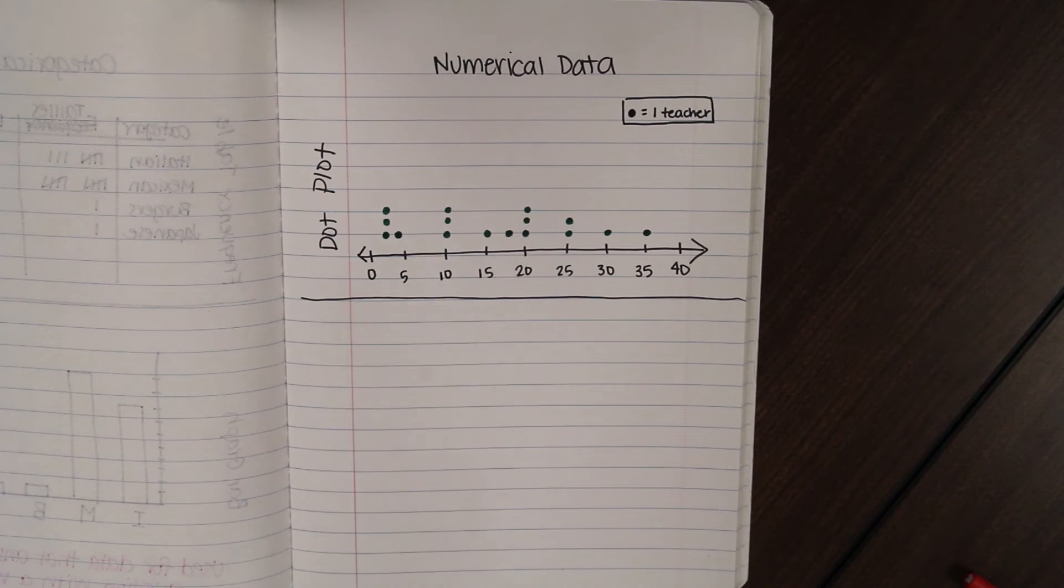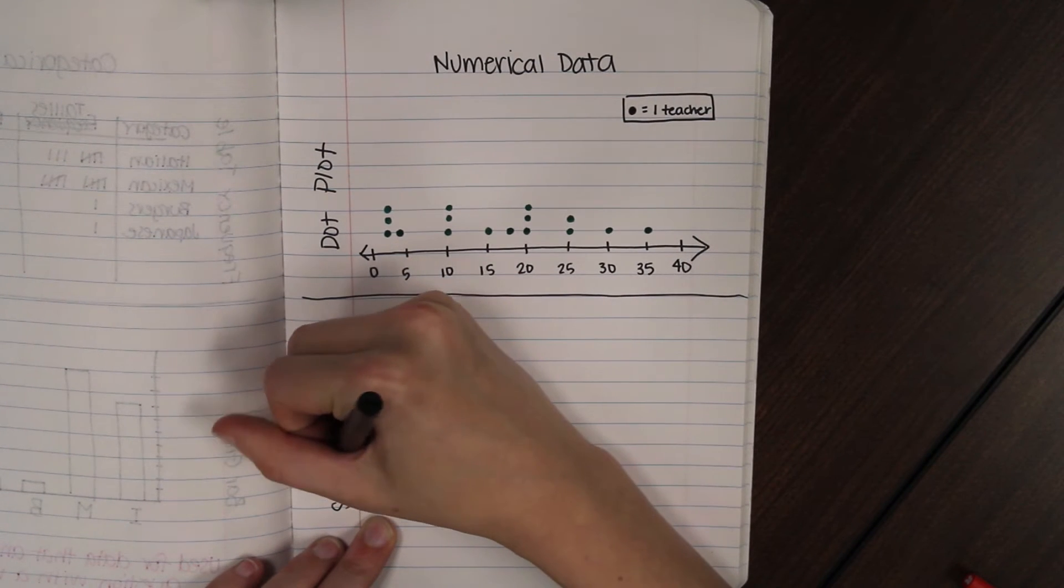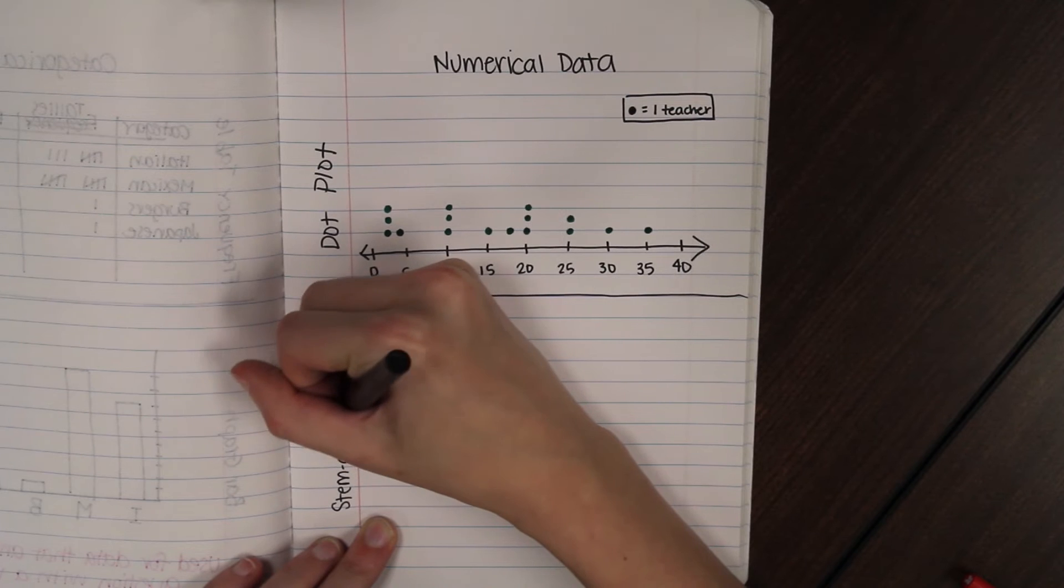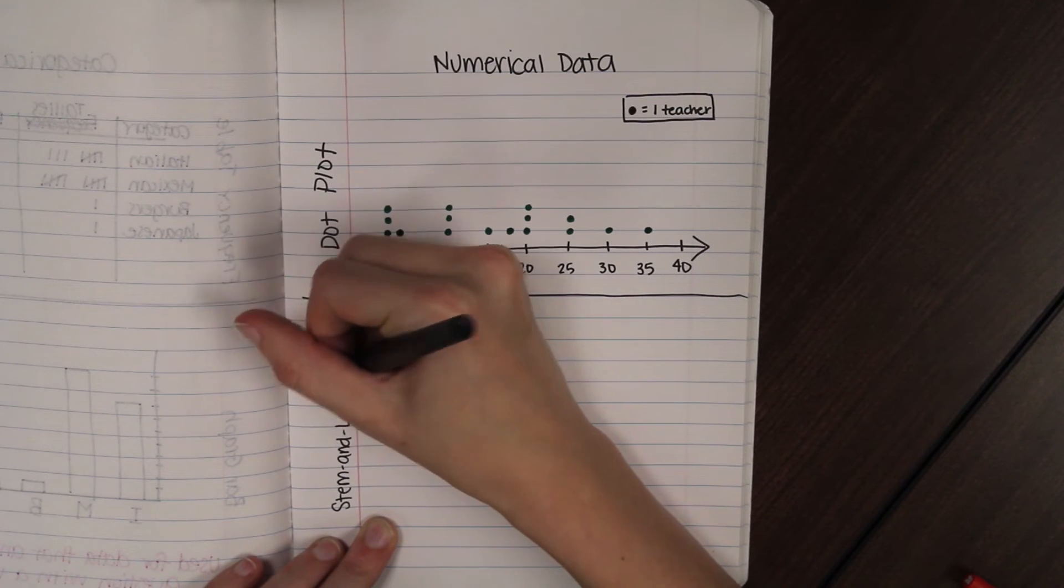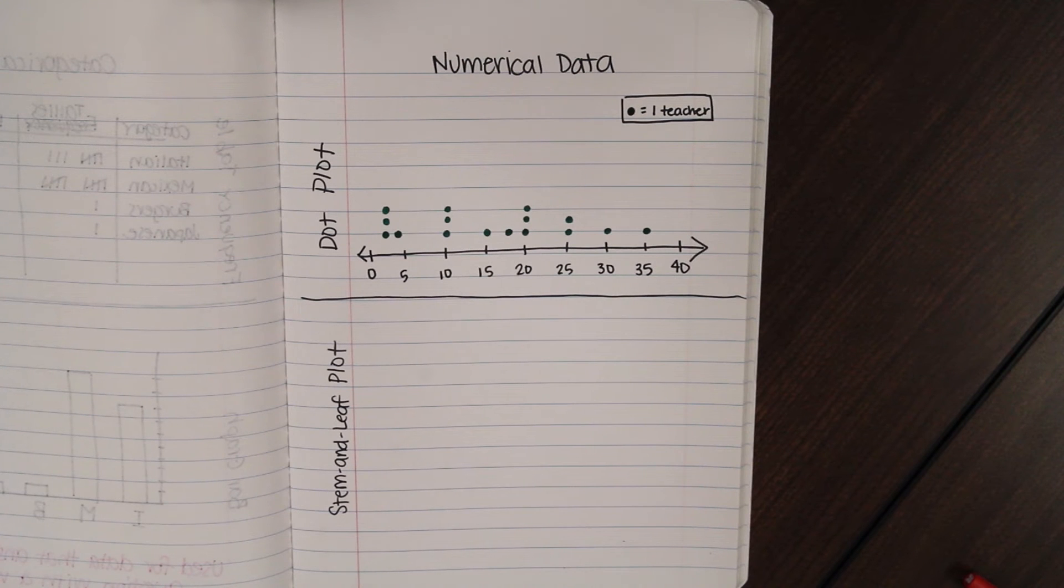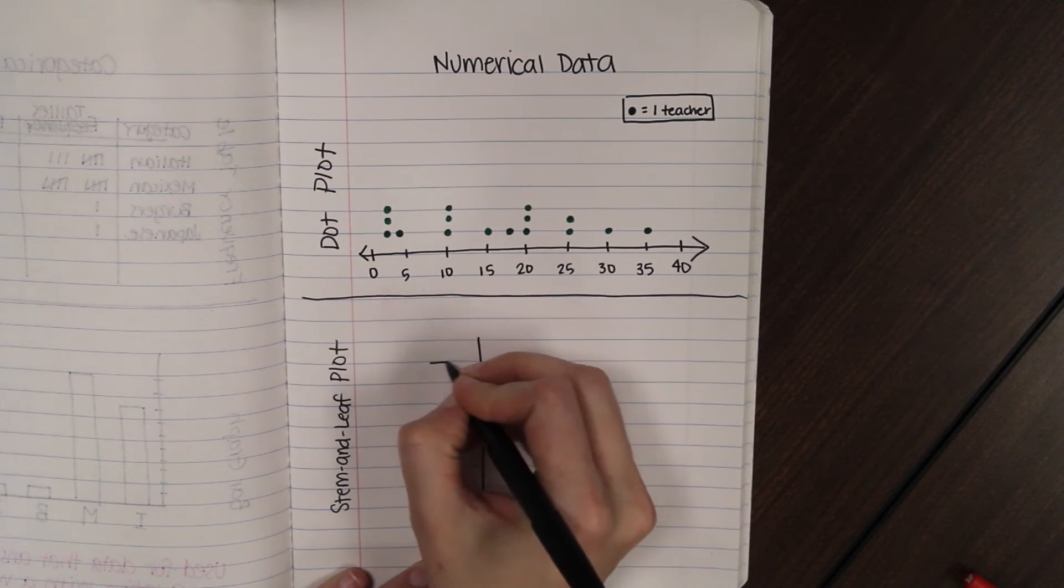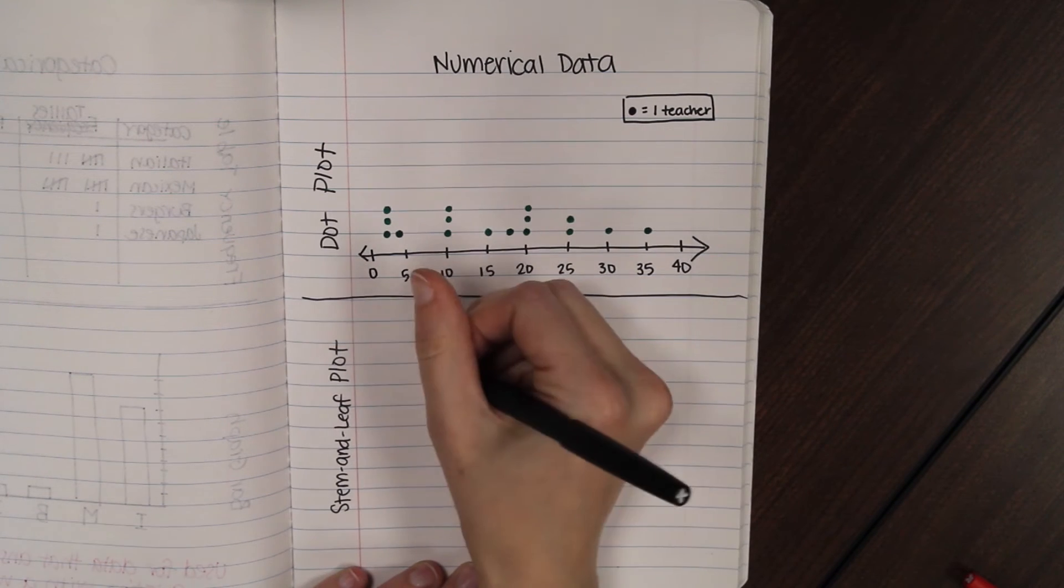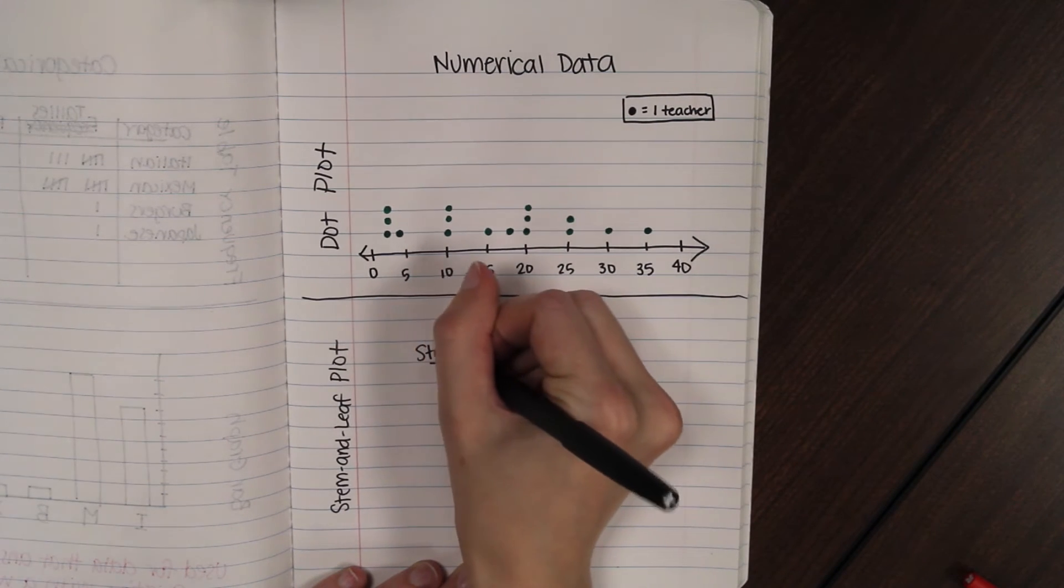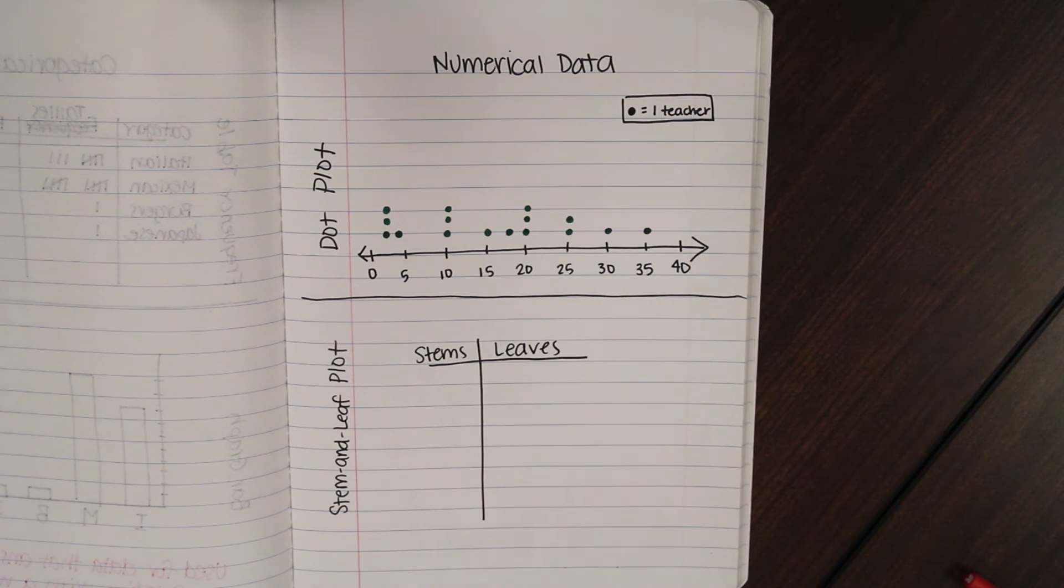The second type that we're going to use the same data is a stem and leaf plot, which you might remember from fourth grade. Alright. So, for stem and leaf plot, we're going to set it up so it looks kind of like a frequency table. It's like a t-chart. And these are called stems and leaves. Alright, we're going to need a key for this, too.